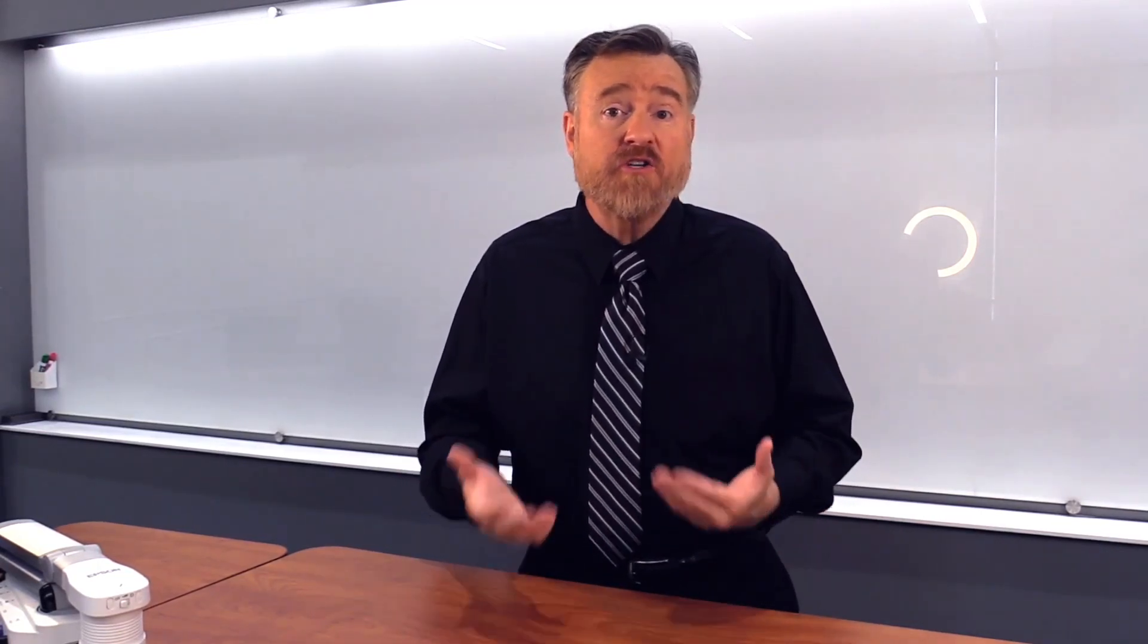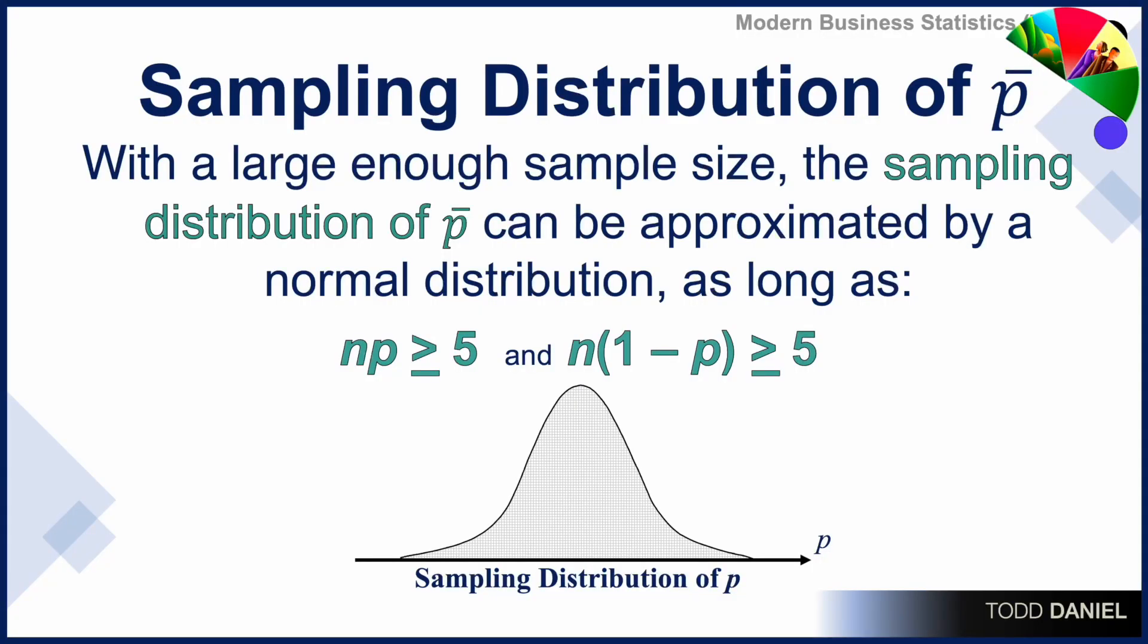So how large is large enough? With a large enough sample size, the distribution of P can be approximated by a normal distribution as long as the sample size times the proportion is greater than or equal to 5, and the sample size times 1 minus the population proportion is greater than or equal to 5.